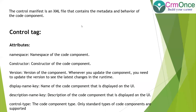The control manifest is an XML file that contains the metadata and behavior of the code component. The entire manifest file contains all the metadata - essentially, when you are configuring this PCF control on model-driven apps or canvas apps, the properties you want to display, the data types and everything, you configure in the manifest file.